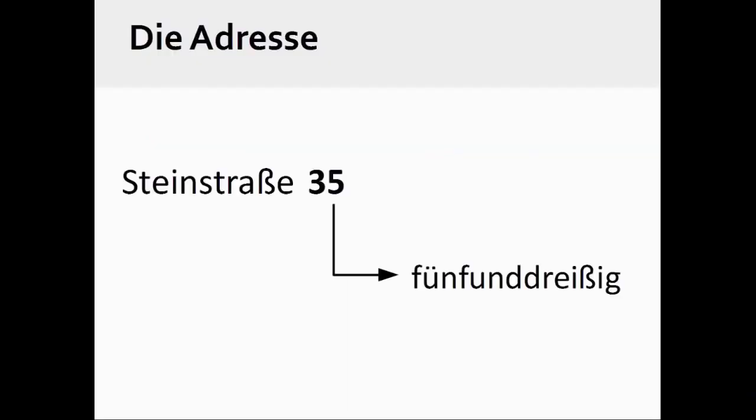In Germany, the house number in an address is listed after the street where the house is located. Steinstraße 35. When relating an address in German, one forms the number in the manner taught earlier in this presentation.